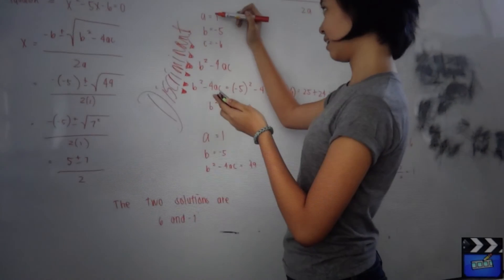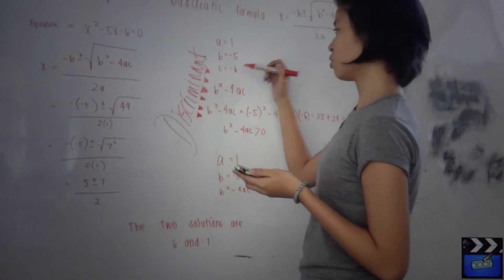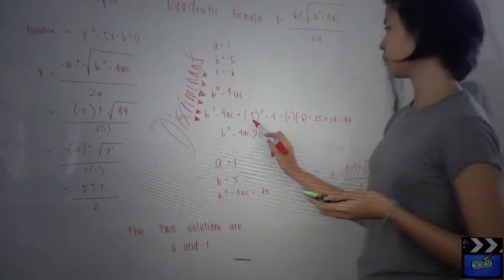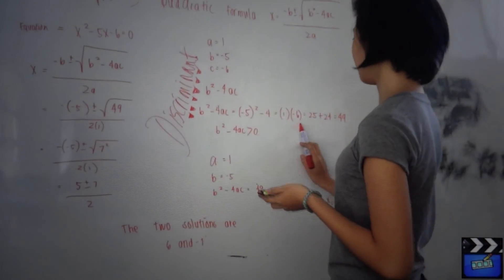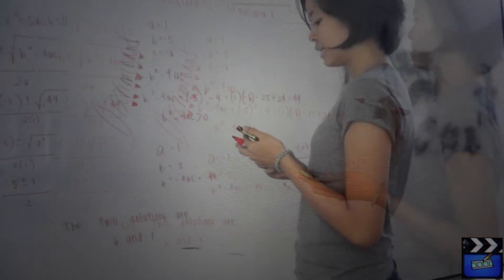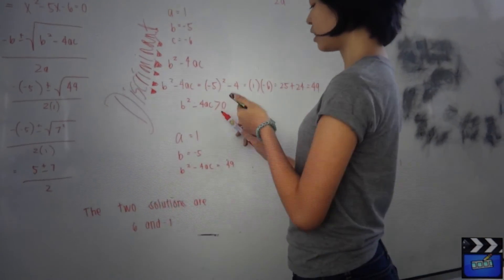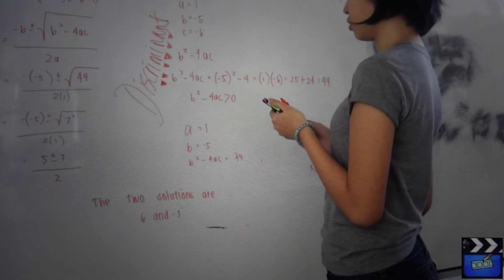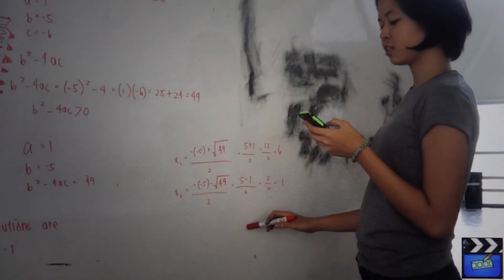With a equals 1, b equals negative 5, and c equals negative 6, we substitute into the discriminant formula b squared minus 4ac. The discriminant comes out positive, so the equation has two solutions. Using the quadratic formula with a equals 1, b equals negative 5, and the discriminant equal to 49, we solve for x.